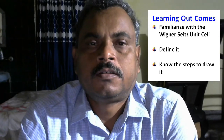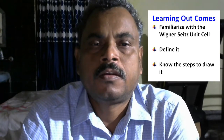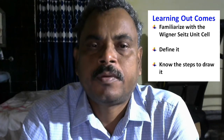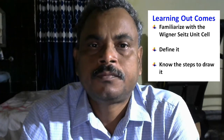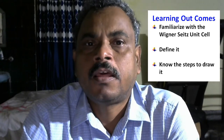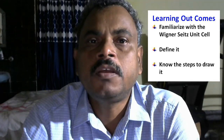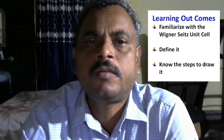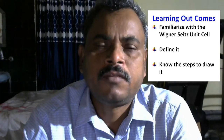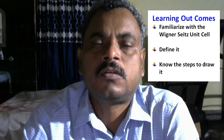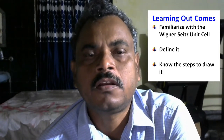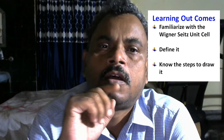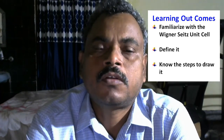Today we are going to start a new topic called the Wigner-Seitz unit cell. It's a special primitive unit cell in which the lattice point is at the center of the unit cell. In every other unit cell I had shown, whether primitive or non-primitive, the lattice point was at the corner. But in the Wigner-Seitz unit cell, the lattice point is at the center.